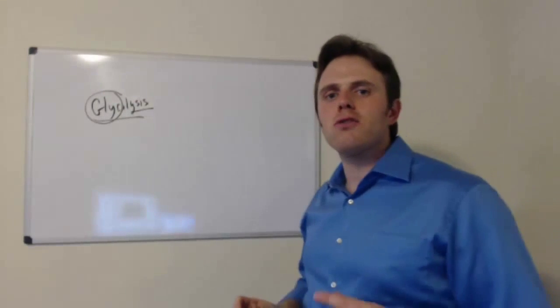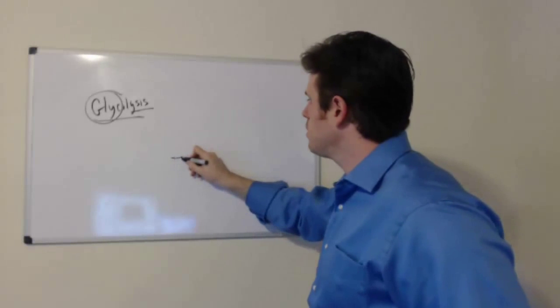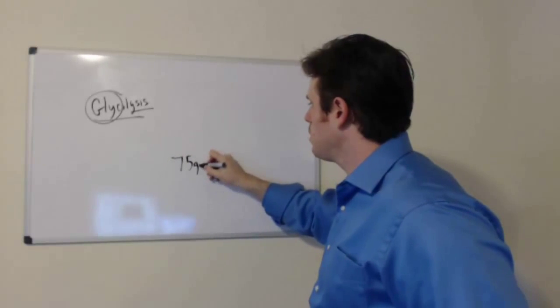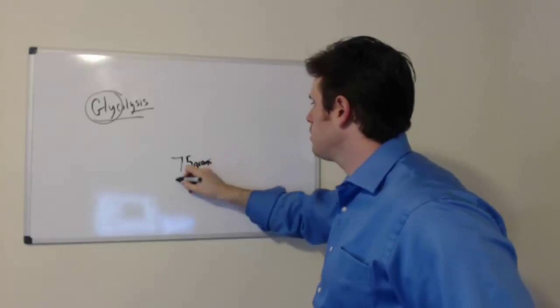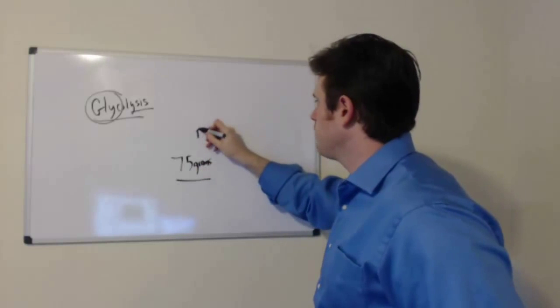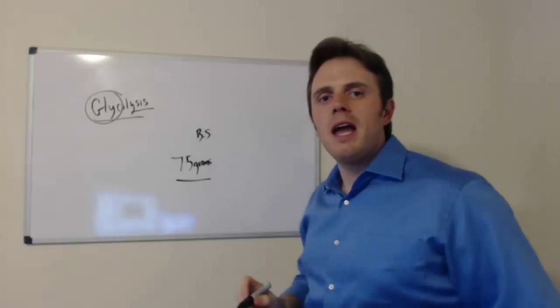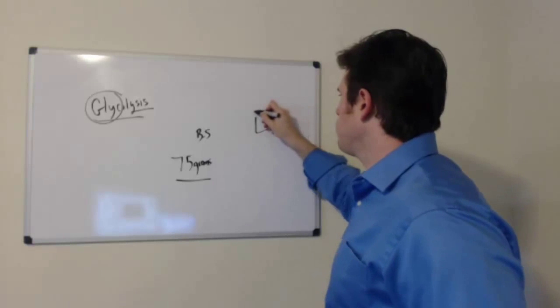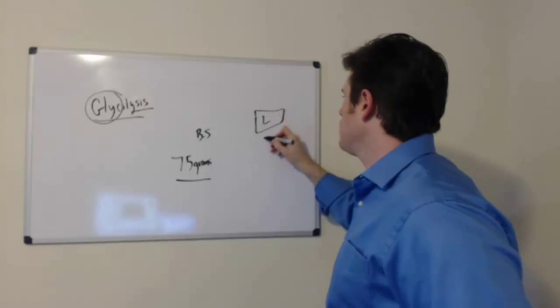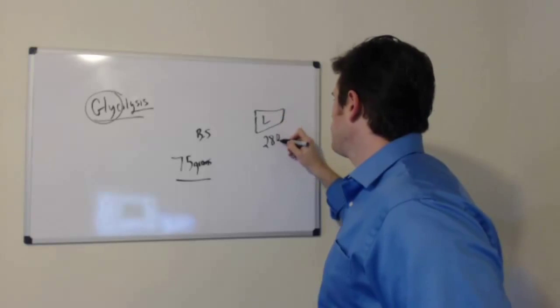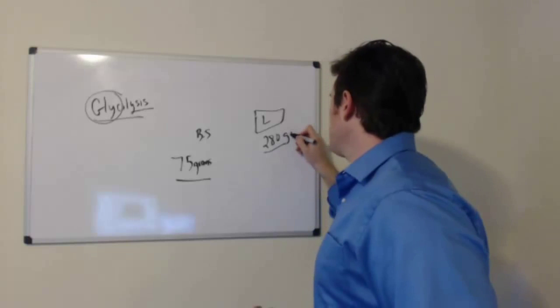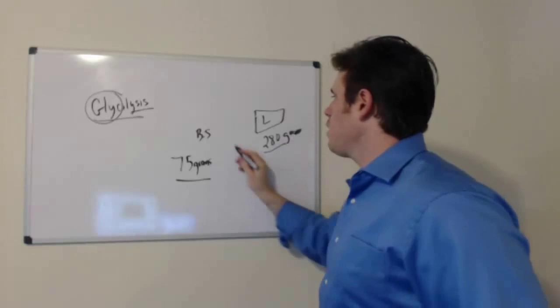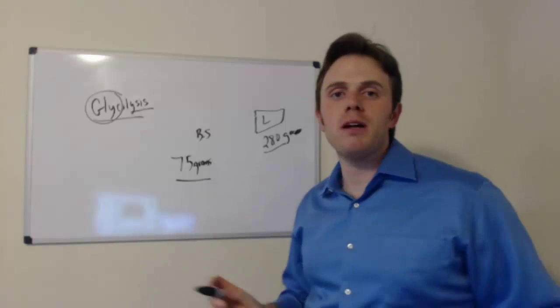So we only can store about 75 grams of blood sugar in the bloodstream and the rest, about 280 grams, is actually going to be stored in the liver. So you can see that the majority of the blood sugar is actually in the liver and only small amounts are actually in the bloodstream.